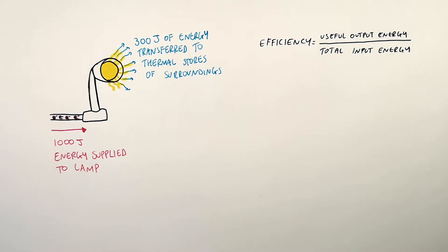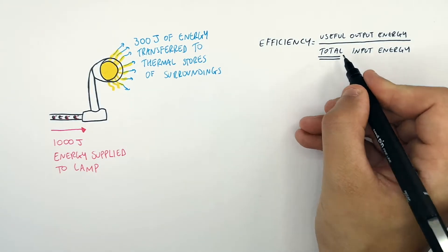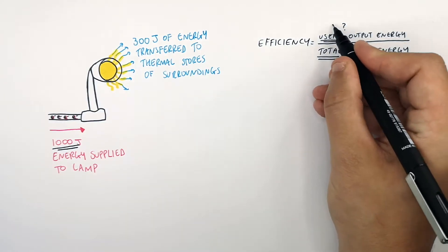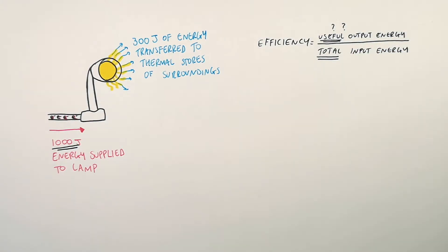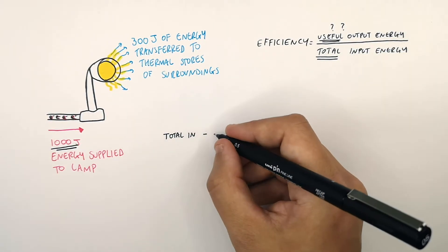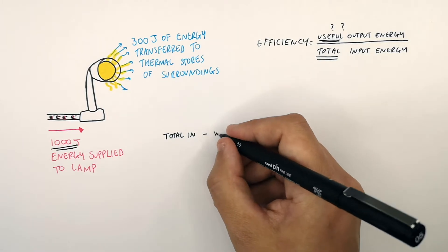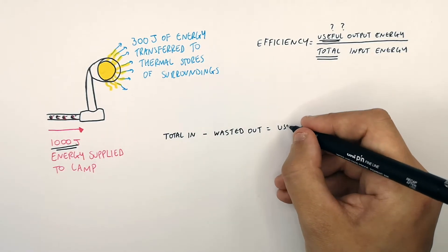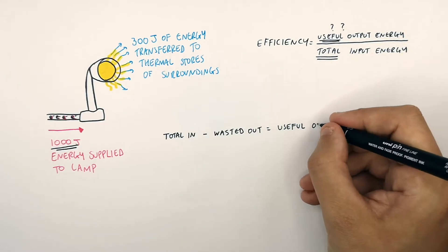We currently don't have the useful output energy, but we do have the total input energy. To calculate the useful output energy, you take the total input and minus the wasted output energy.